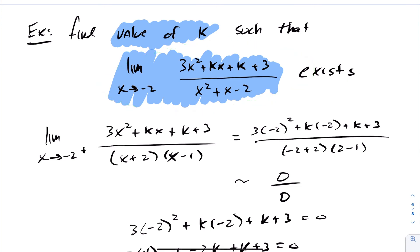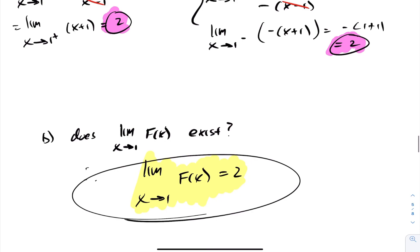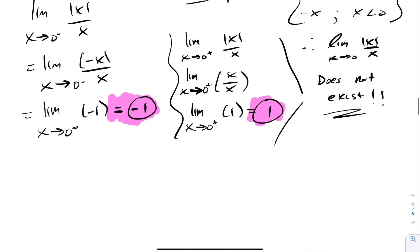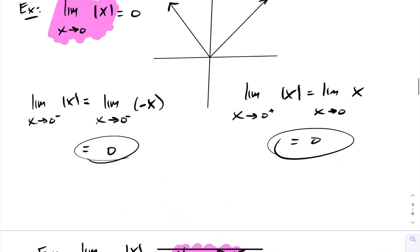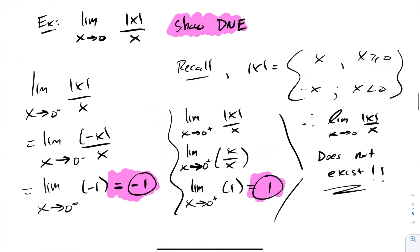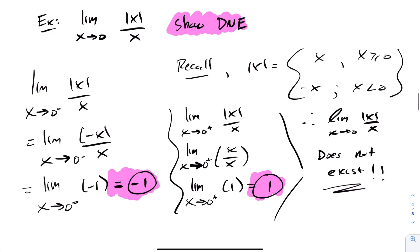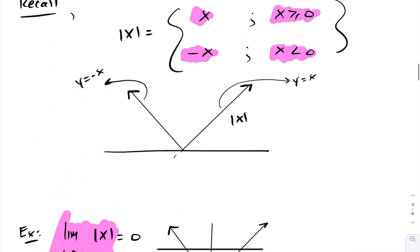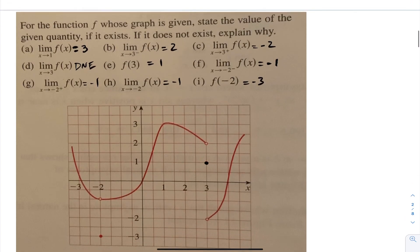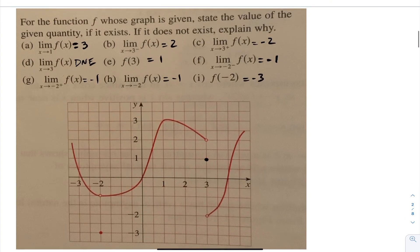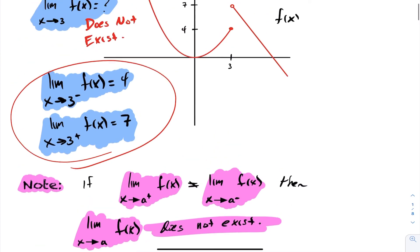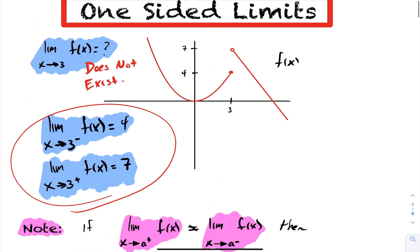That concludes one-sided limits. Please review these concepts and go through some of them on your own. Make sure you have a decent idea of how the absolute value function is working here as well — that was an important part of the lesson. Take a look at the examples, re-watch if need be, and try to go through them yourself. Thank you.